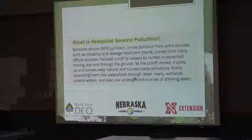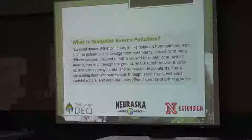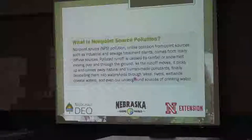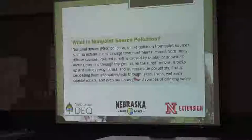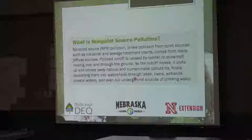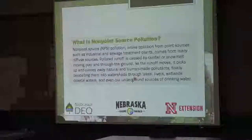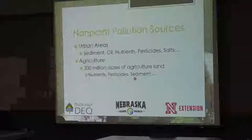Non-point source pollution is where you can't identify a specific point where it's introduced. Things like general runoff of fields, general runoff of streets, golf courses — all of those are non-point source pollution. There's no one definitive place where it's coming from. The caveat is that if we drain tile a field, all that water goes to one spot — there's a pipe at the end of that field — but legally speaking, it is still non-point source pollution. Anything else coming out of a pipe is point source. Urban areas and ag are non-point source.